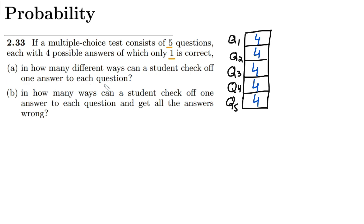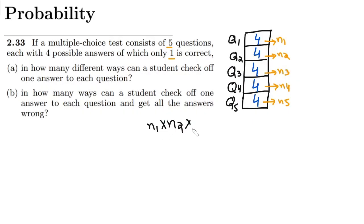So in how many different ways can a student check off one answer to each question? If I call them n1, n2, n3, n4, and n5, the total number of different ways of selecting the answers would be n1 multiplied by n2 multiplied by n3 multiplied by n4 multiplied by n5, because with each option the other options will be replicated or connected.